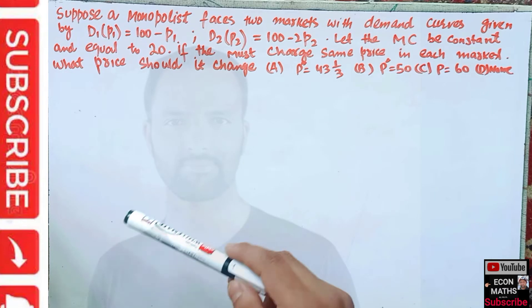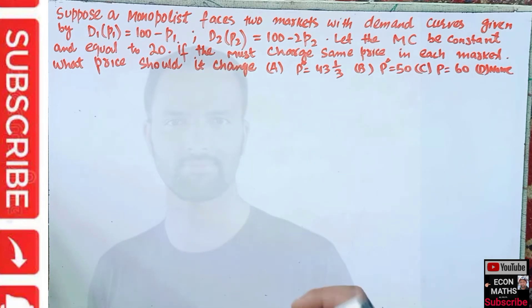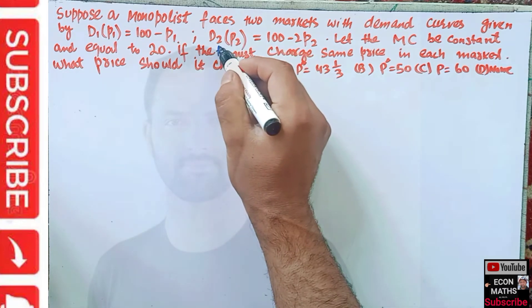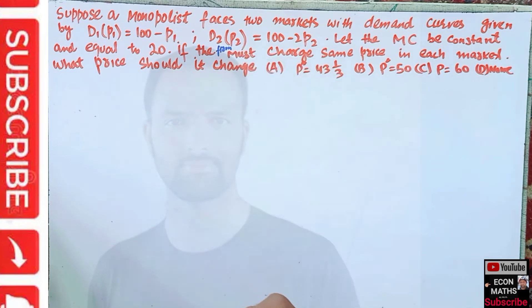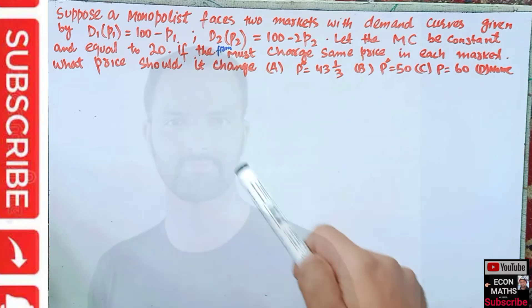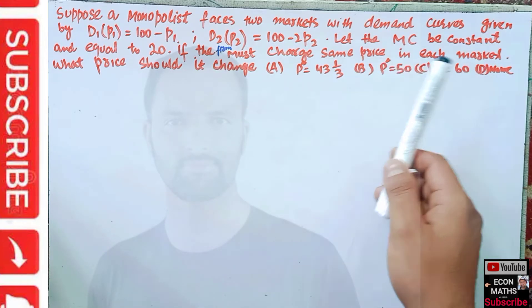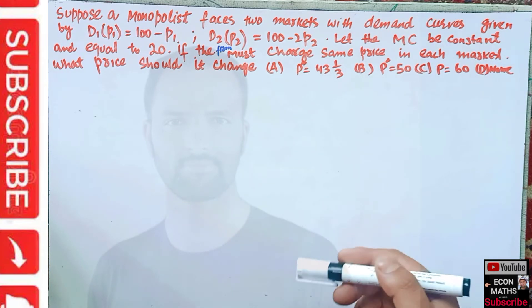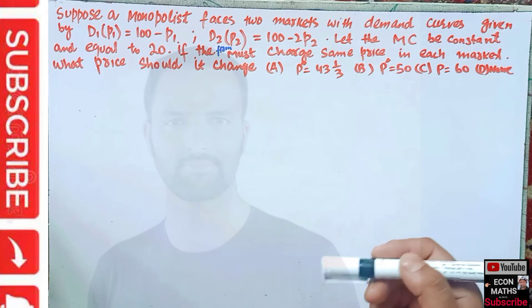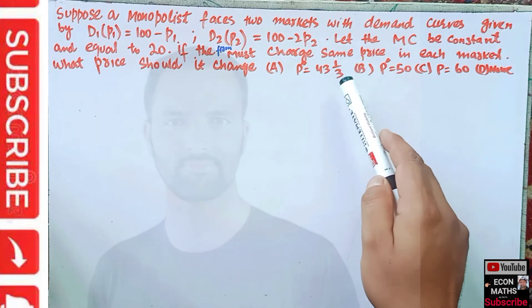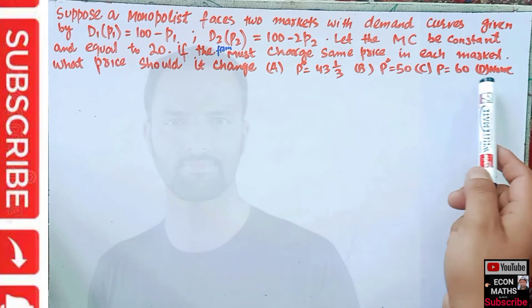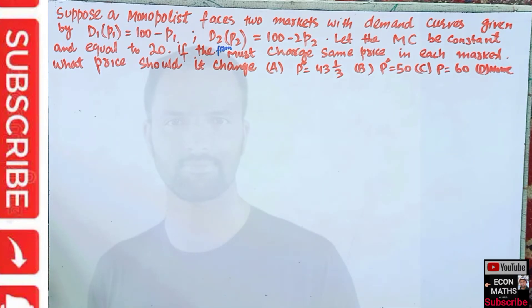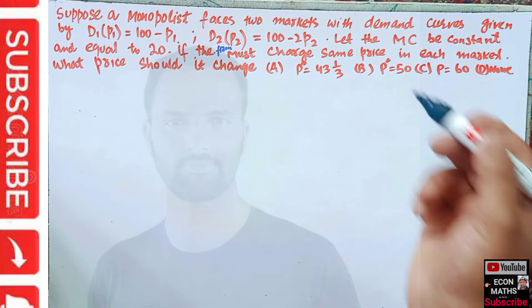If the monopolist must charge the same price in each market, what price should he charge? We have to find the price the monopolist will charge when he does not discriminate in terms of price. The options are 43⅓, 50, 60, or none of the above.